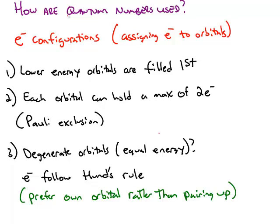After we understand the basics of quantum numbers, now we want to apply those quantum numbers. Doing this is called finding the electron configuration of an atom. In other words, we're going to be assigning electrons to orbitals, and we have to follow these three general principles.